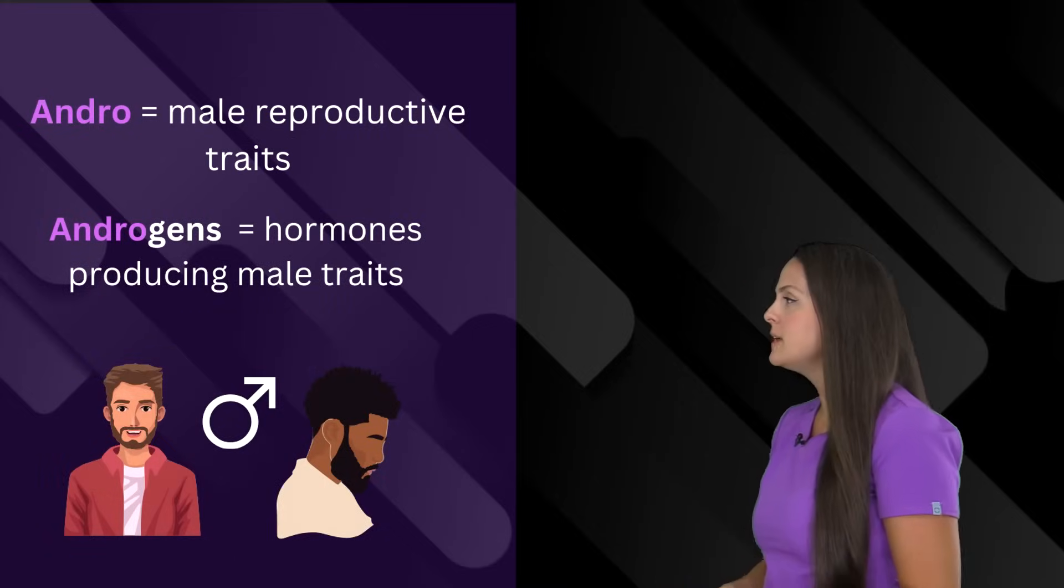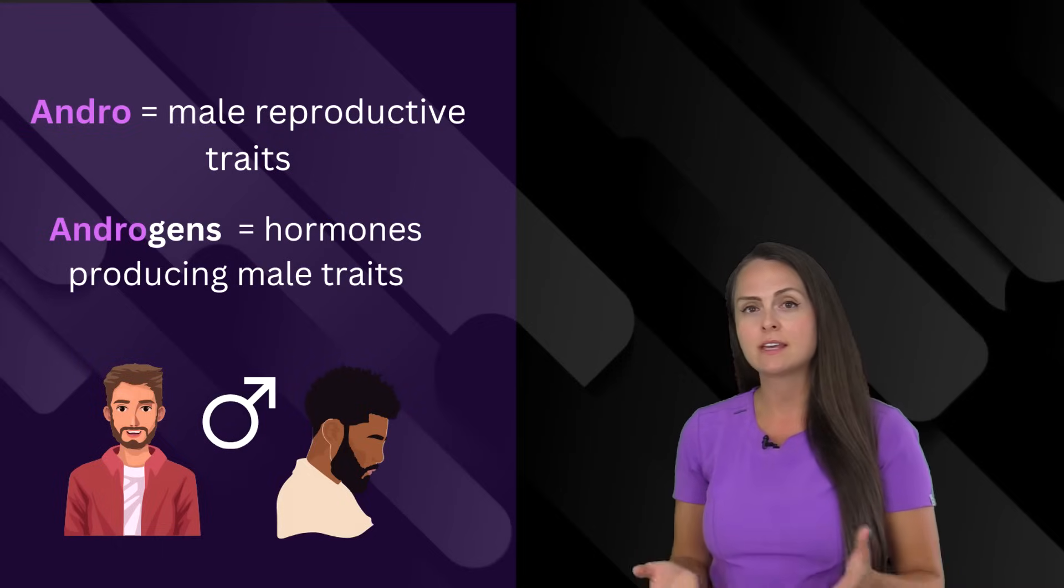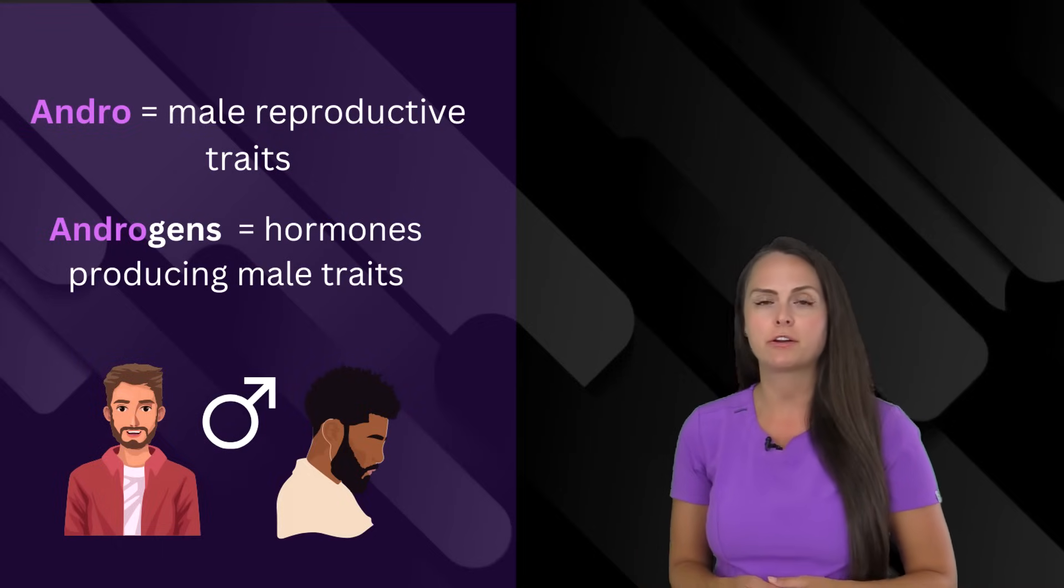Then there's andro, which means the male reproductive system. It's found in the word androgens, which is a sex hormone that promotes male characteristics.